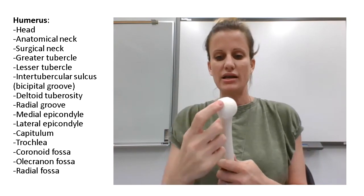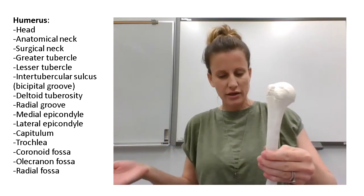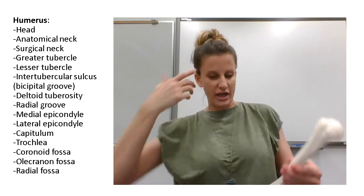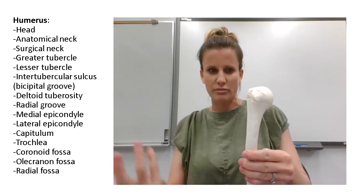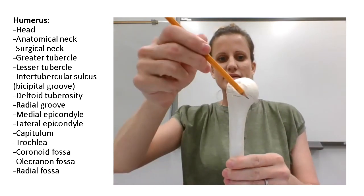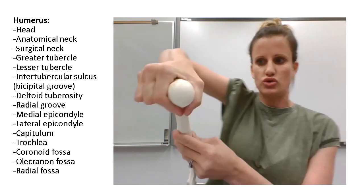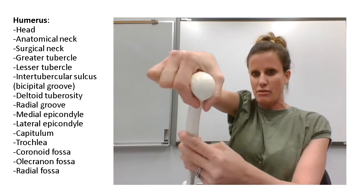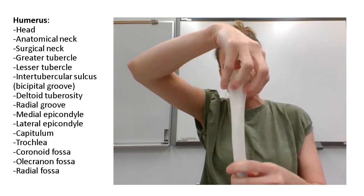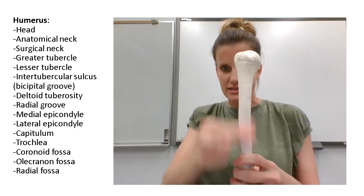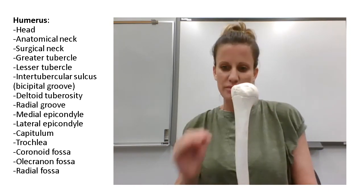The humerus has an anatomical neck and a surgical neck. Just like on us, the neck is what connects your head to the body — the neck connects the head to the rest of the bone or the shaft. The anatomical neck is the region just around the rounded part, circling right here. The surgical neck is the thin part of the bone where the epiphysis connects to the shaft or diaphysis.